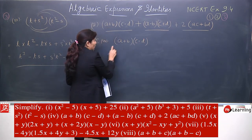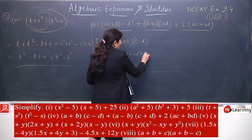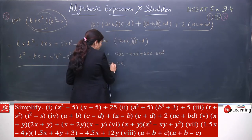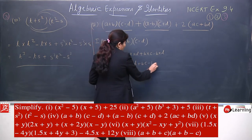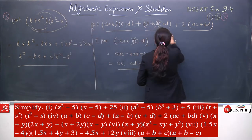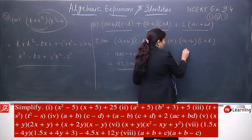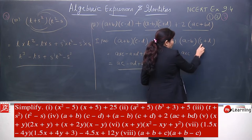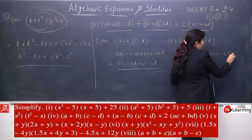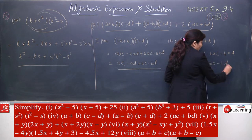I will tell you both methods. For the first part (a+b)(c-d): a into c minus a into d plus b into c minus b into d. Now we are very comfortable with multiplication. This gives: ac minus ad plus bc minus bd. This is your first part. Now second part: (a-b)(c+d). a into c plus a into d minus b into c minus b into d. This gives: ac plus ad minus bc minus bd.